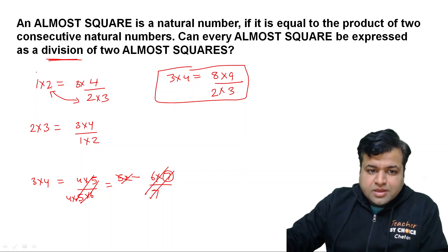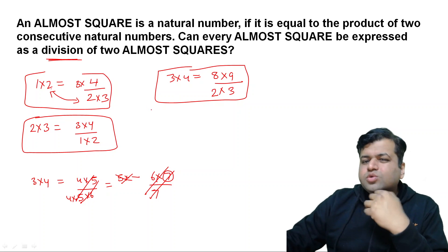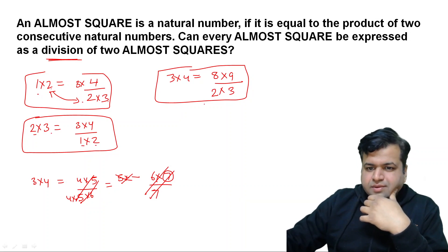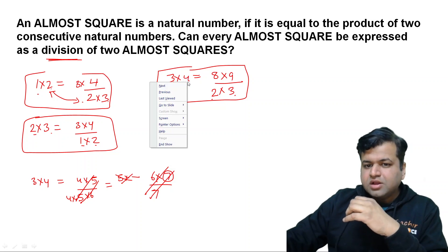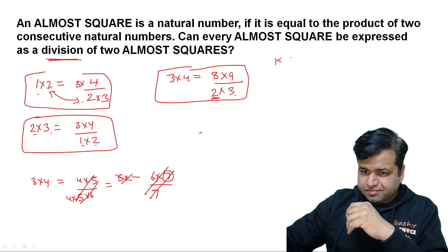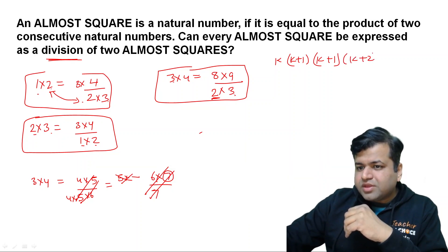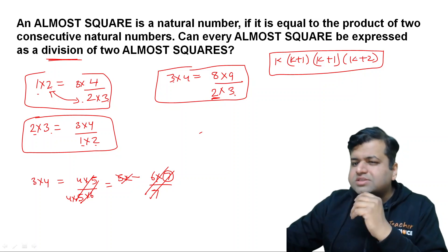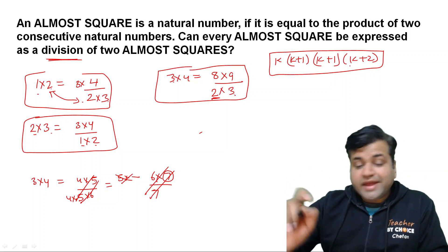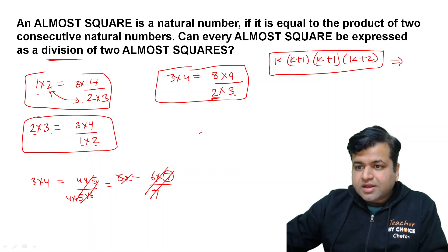So far we have expressed 1×2, 2×3, and 3×4. Now let's try to get a hint from these observations. If you look carefully at the pattern: 1,2 then 2,3 then 2,3 then 3,4 — it seems that for a general k×(k+1), there is a pattern involving k×(k+1)×(k+1)×(k+2). Let's try to work with this number more carefully — that is the hint.